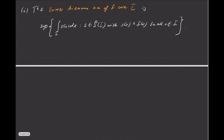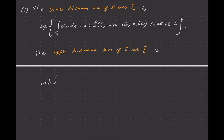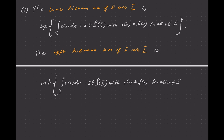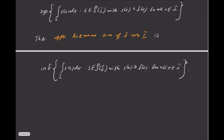The upper Riemann sum is defined analogously as the infimum of ∫_I s(x)dx over all step functions s satisfying s(x) ≥ f(x) for all x in I. So we take the infimum over all step functions that bound f from above.